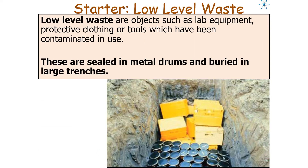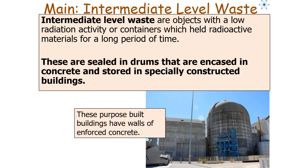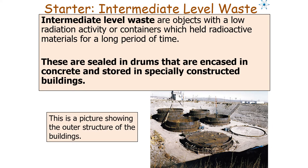Low-level radioactive waste includes objects such as lab equipment, protective clothing, or tools which have been contaminated in use. These are sealed in metal drums and buried in large trenches. Intermediate-level waste includes objects with low radiation activity or containers that held radioactive materials for a long period. This waste is sealed in drums, encased in concrete, and stored in specially constructed buildings with walls of reinforced concrete.